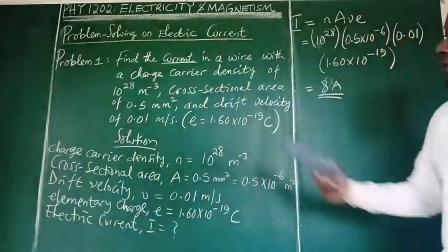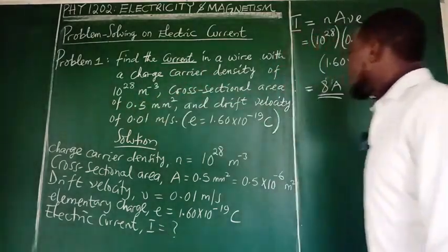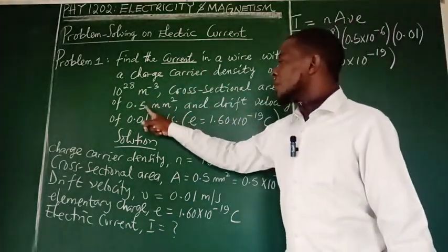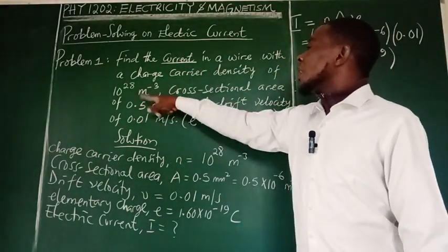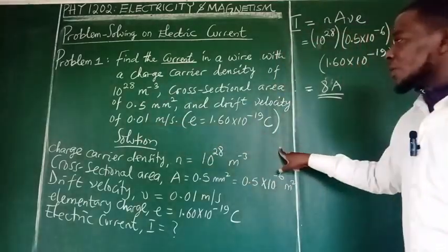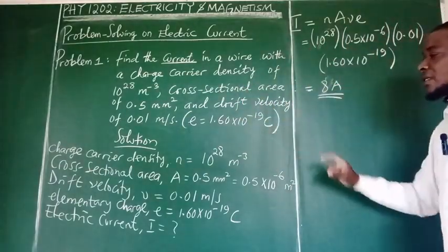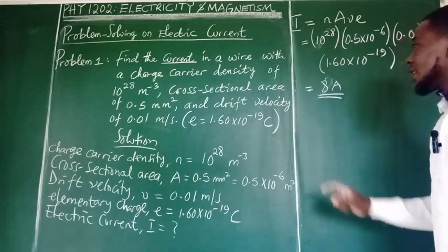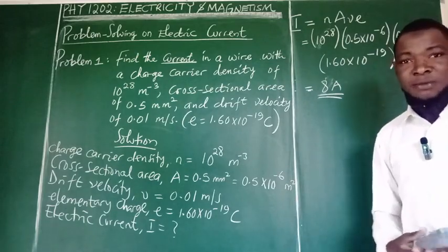So in this wire where the carrier density is this, the cross-sectional area of the wire is this, the drift velocity of the free electrons is this and this is the electronic charge, when this happens the magnitude of current generated in the conductor is 8 ampere and that is it. Thank you for watching.